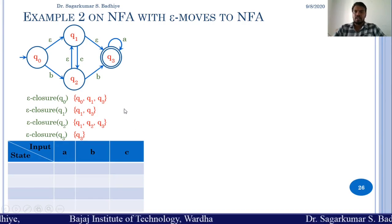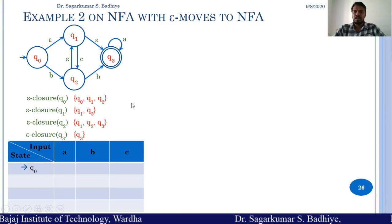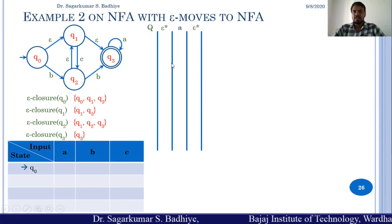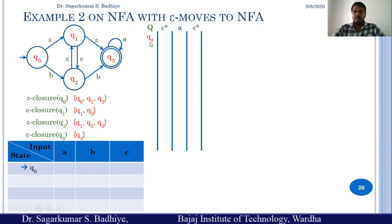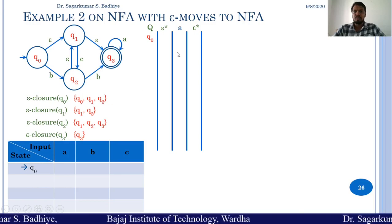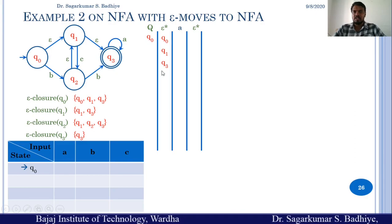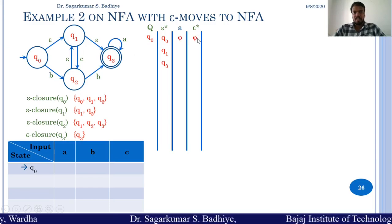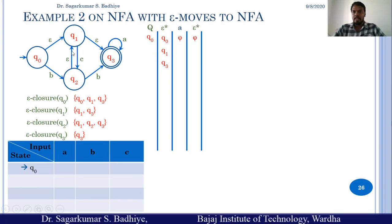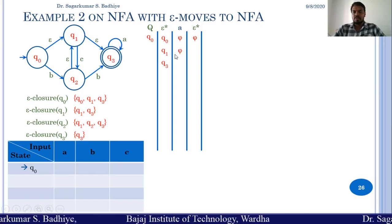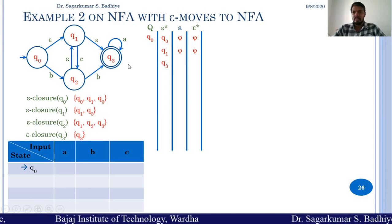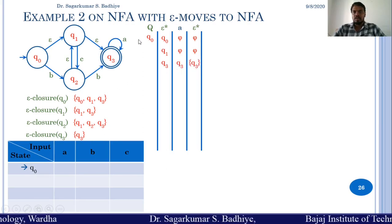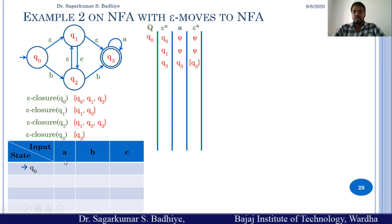Now let us construct the table for the equivalent NFA, considering the initial state as Q0. Transition from Q0 on A: we compute epsilon closure of Q0, which is Q0, Q1, Q3. Q0 on A has no transition — that is phi, and epsilon closure of phi is phi. Q1 on A also has no transition — phi. Q3 on A goes to Q3 itself, and epsilon closure of Q3 is Q3. So Q0 on A goes to Q3 in the equivalent NFA.